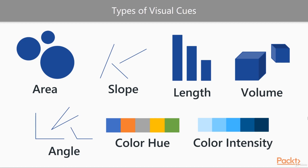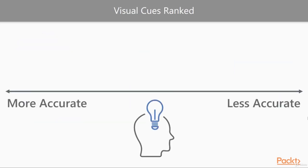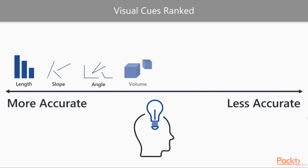However, not all of these are created equal. Studies have shown that our brains perceive these types of cues differently, and more specifically, some of these are easier to interpret than others with regards to differences in a value. Let's distribute these cues across a ranked axis, ranging from more accurate to less accurate.